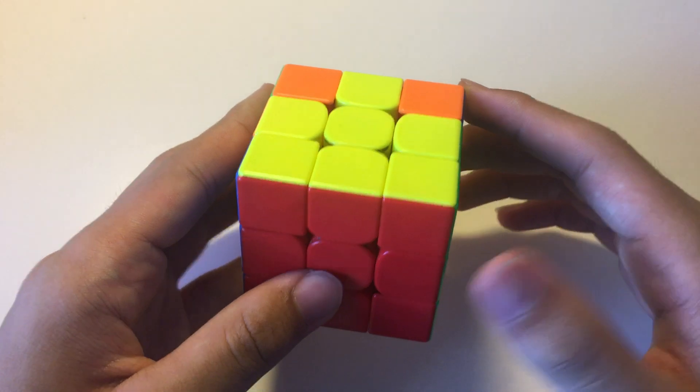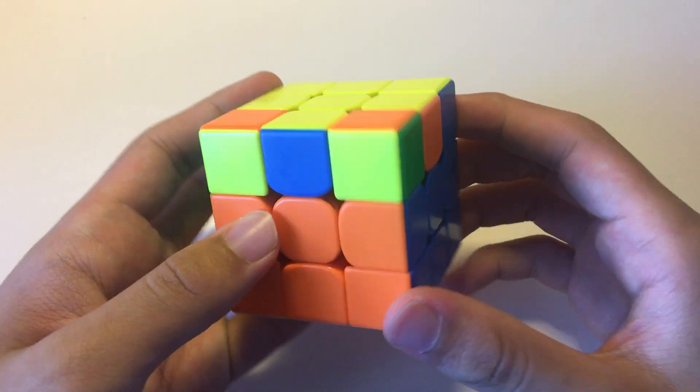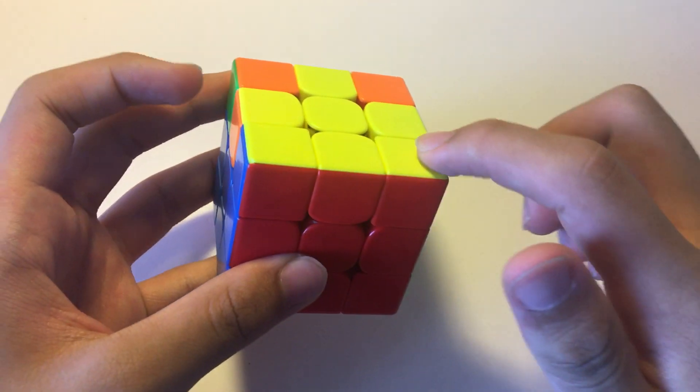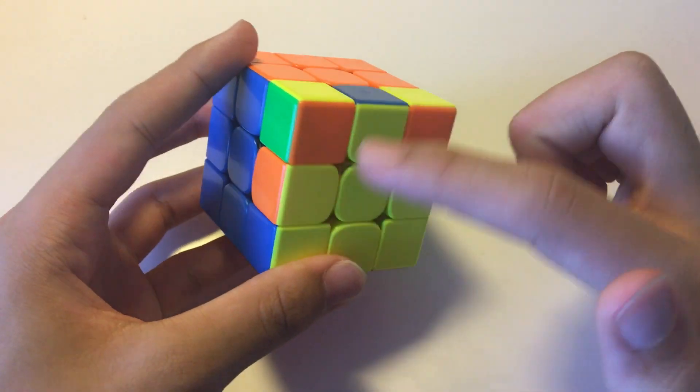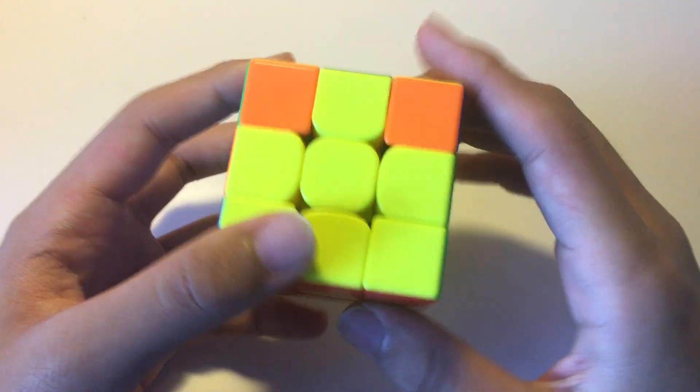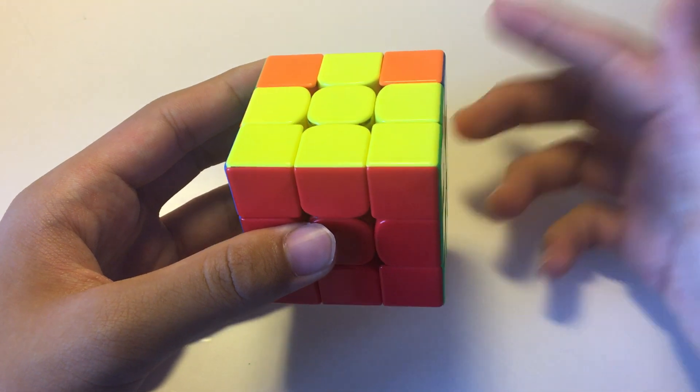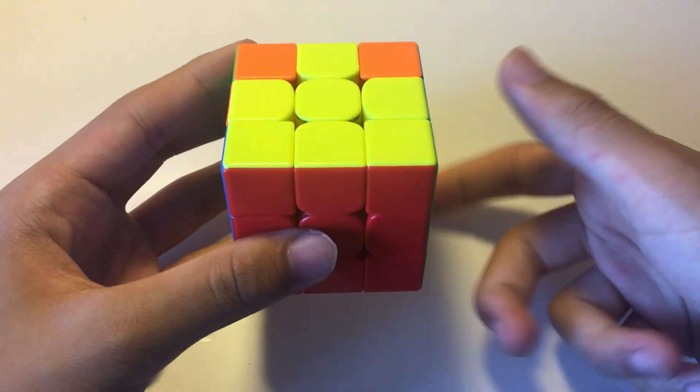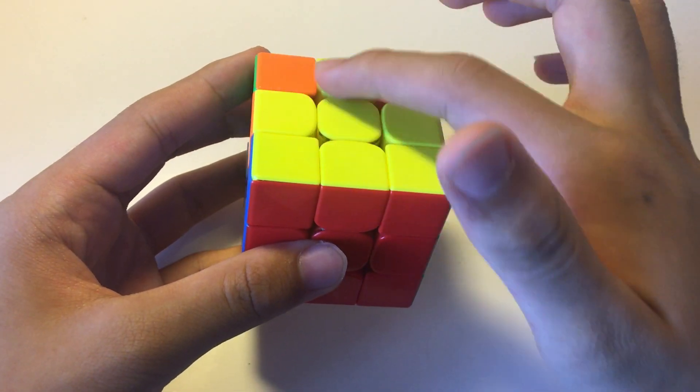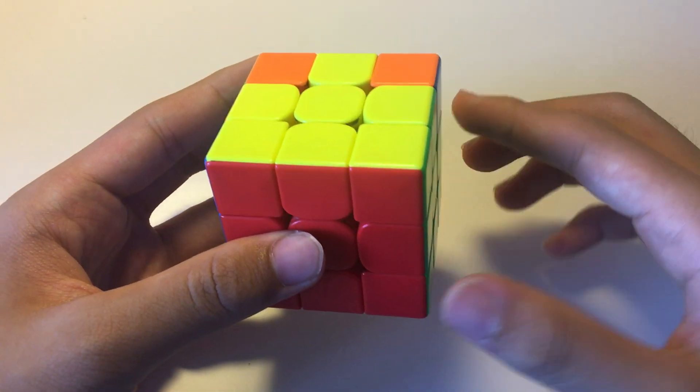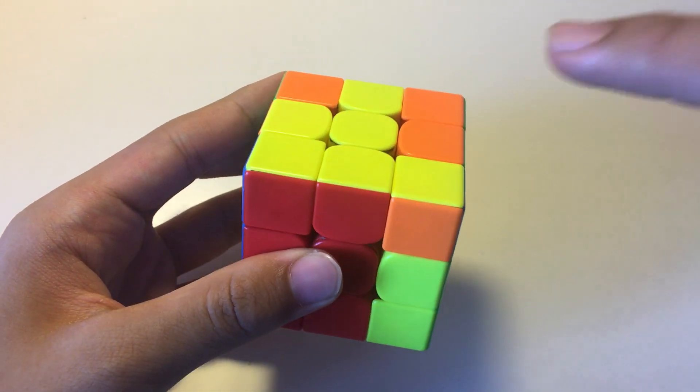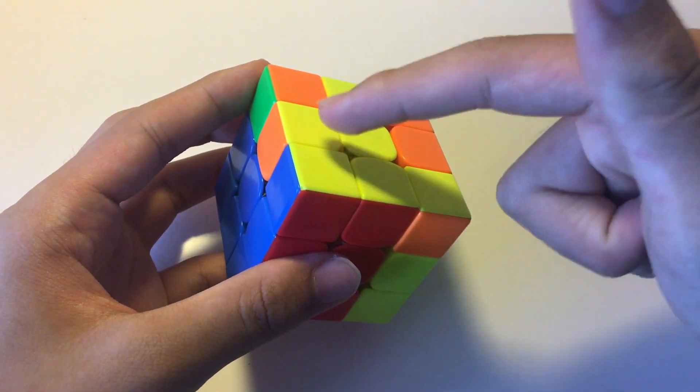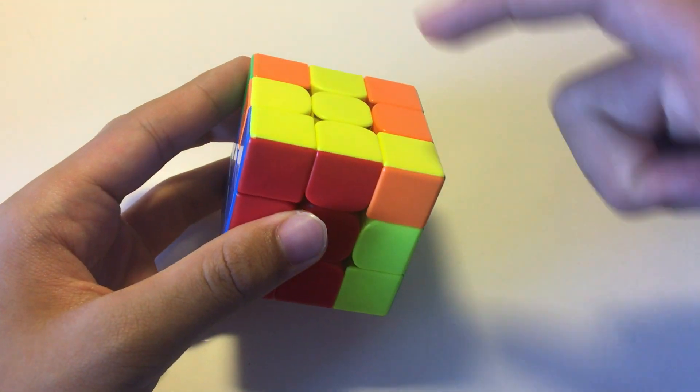So, for example, in the first case, essentially what we have is that these are all solved. And to solve the entire cube, we need to swap these two edges and we need to swap these two corners. And so the setup move essentially brings this corner down. These three pieces aren't disturbed by the setup move, which is R prime. It brings this corner down. And so essentially now we have to swap these two edges and these two corners.